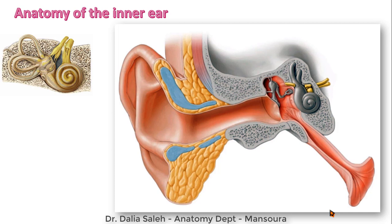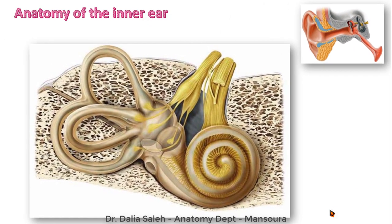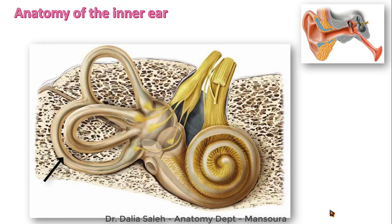Now let's move to the anatomy of the inner ear. The inner ear lies within the petrous part of the temporal bone of the skull. It is made of two parts: the outer bony part, called the bony labyrinth, and the inner membranous part, called the membranous labyrinth. The bony labyrinth is made of three areas: the cochlea (which looks like a snail shell), the vestibule, and the three semicircular canals. Within the cochlea we have the cochlear duct, from which the cochlear division of the eighth cranial nerve arises. Inside the vestibule we have the saccule and utricle, and inside the three semicircular canals we have the three semicircular ducts, from which the vestibular division of the vestibulocochlear nerve arises.